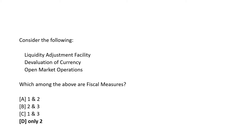The next question involves three concepts: liquidity adjustment facility, devaluation of currency, and open market operations. Which among these are considered fiscal measures? The answer is only devaluation of currency, which is a fiscal measure, whereas liquidity adjustment facility and open market operations are not fiscal measures.